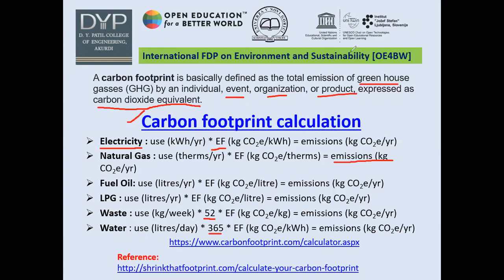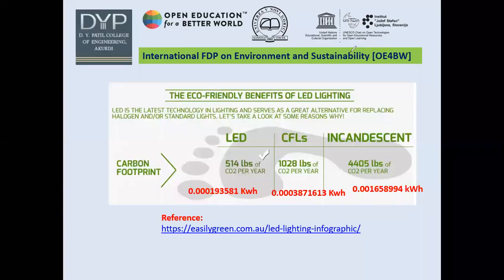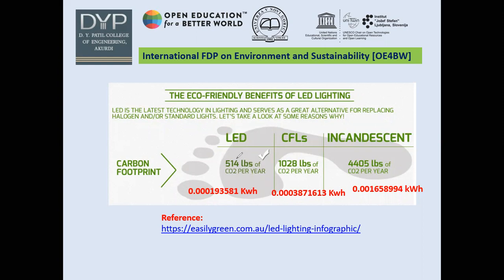In the next slide, we can see a comparison of LED, CFL, and incandescent bulbs in terms of carbon footprints. An LED bulb generates 514 lbs of CO2 per year. A CFL bulb generates approximately double that — roughly double the CO2 per year.